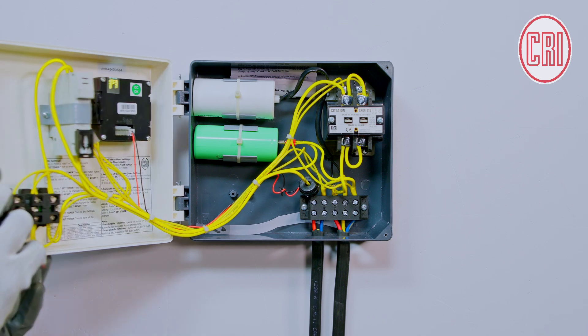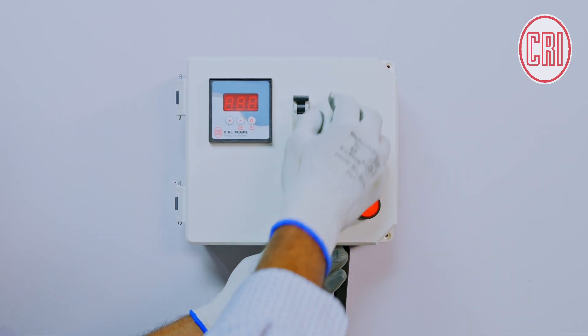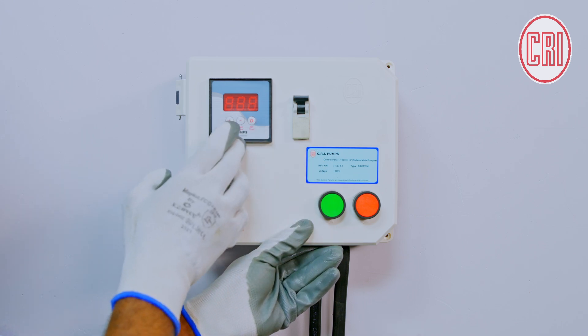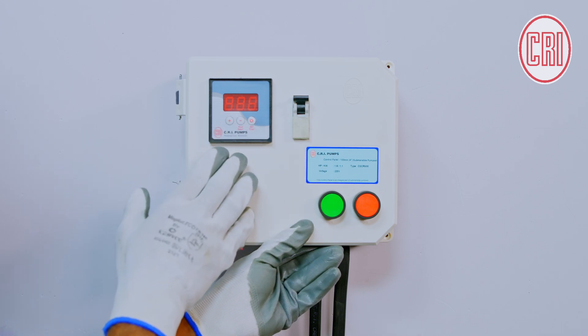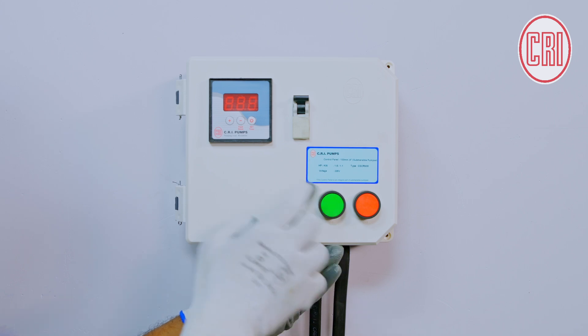Now I am closing the box and turning the MCB on. Now the display will be blank because the meter failed. This must not be a blocker for not using the motor. Hence I have done the bypass process. I am turning the pump on. The motor is running, but in this mode all the protection features will be disabled.